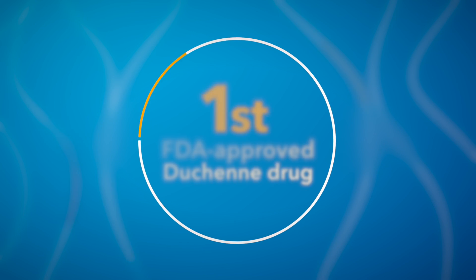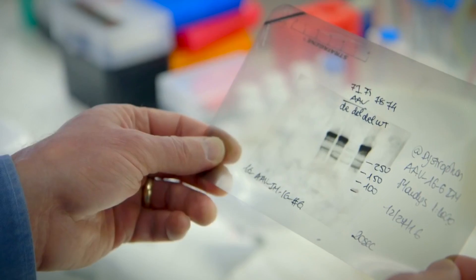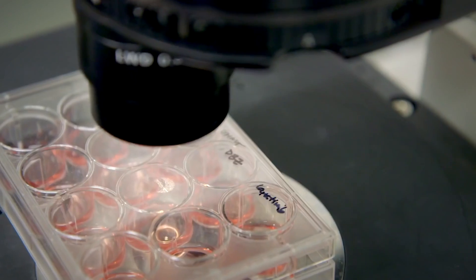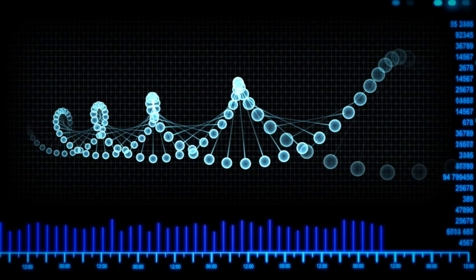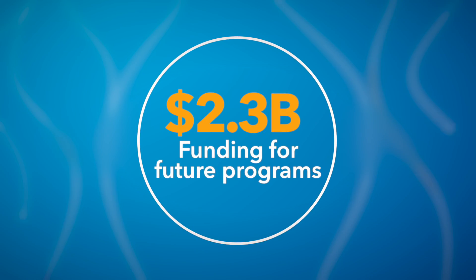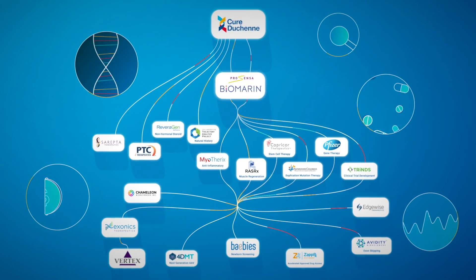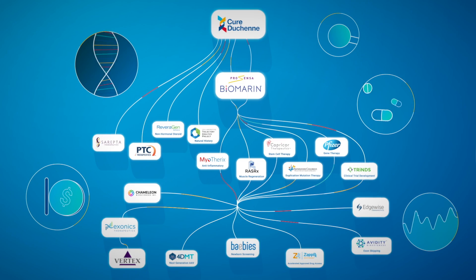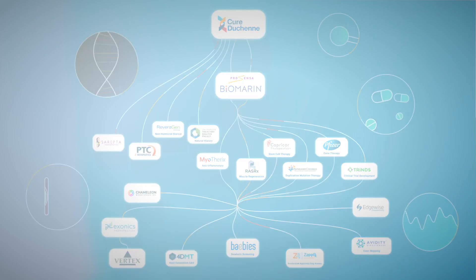Thanks to the efforts of Cure Duchenne Ventures to de-risk early science and deliver proof of concept, our early-stage funding has enabled the research to attract $2.3 billion from investors and pharmaceutical companies, accelerating the research that's creating a pathway to a cure.